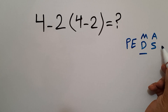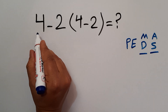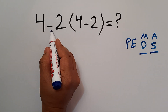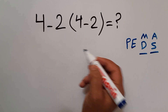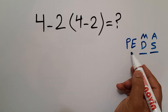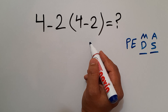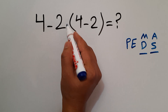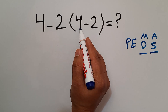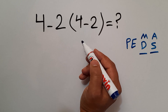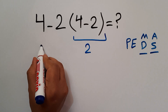The same applies to addition and subtraction. In this expression, we have one subtraction, one multiplication, and one set of parentheses. According to PEMDAS, parentheses have higher priority than other operations, so first we handle the parentheses. Inside the parentheses we have 4 minus 2, which gives us 2.